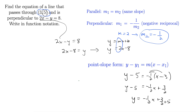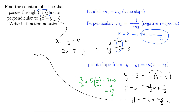Let's work out 3 halves plus 5 on the side. We need a common denominator, so I'm going to multiply by 2 over 2. That gives us 3 plus 10 over 2, so 13 halves. Thus our answer is y equals negative 1 half x plus 13 halves. This is almost always a perfectly good answer, but this problem wants us to write it in function notation. So f(x) equals negative 1 half x plus 13 halves. Final answer.